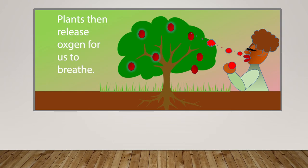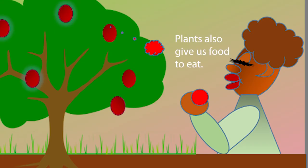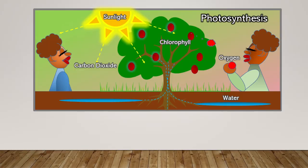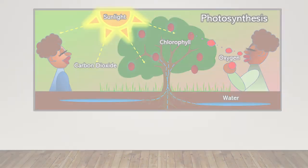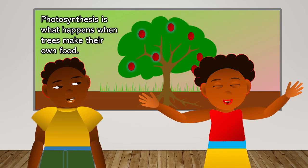Plants then release oxygen for us to breathe. Plants also give us food to eat. Photosynthesis is what happens when trees make their own food. I'll see you next time.